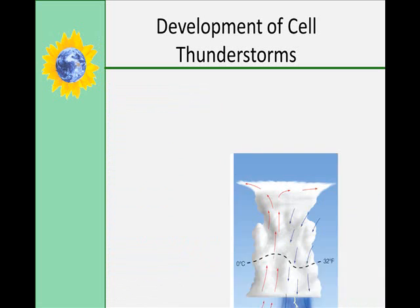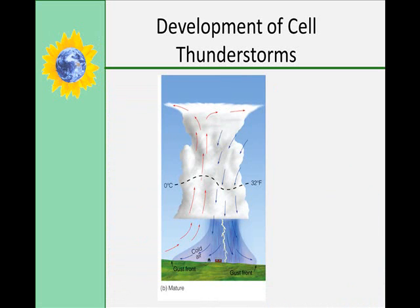The mature stage is when precipitation starts. It involves entrainment, where dry air from around the cloud is drawn in, and some cloud droplets evaporate and chill the air. It also includes a downdraft — cold and heavy air begins to sink — and the updraft and downdraft form a storm cell within themselves. Then you get a gust front at the boundary between the cold and warm air at the surface, and you get lightning and thunder at this stage.